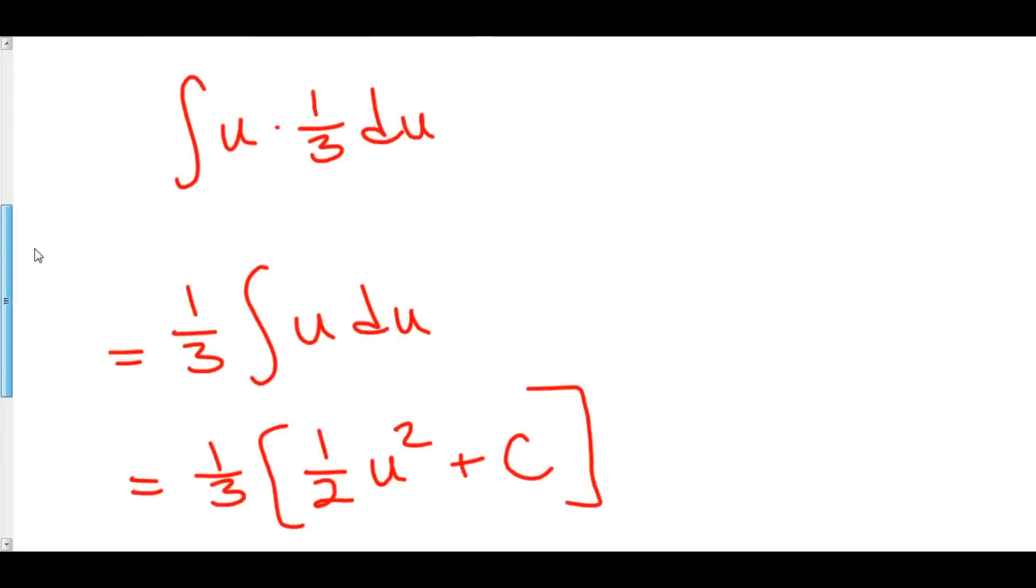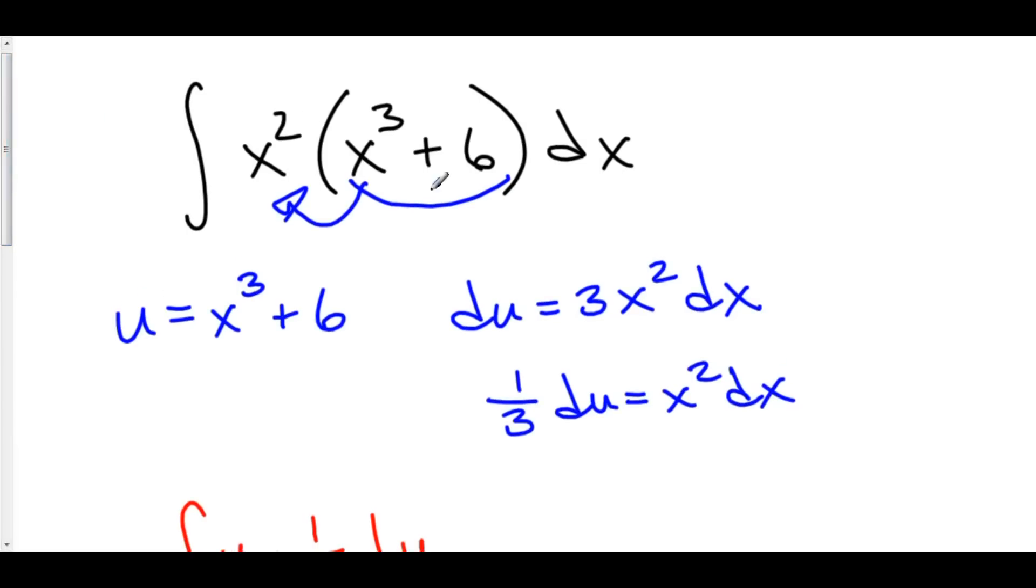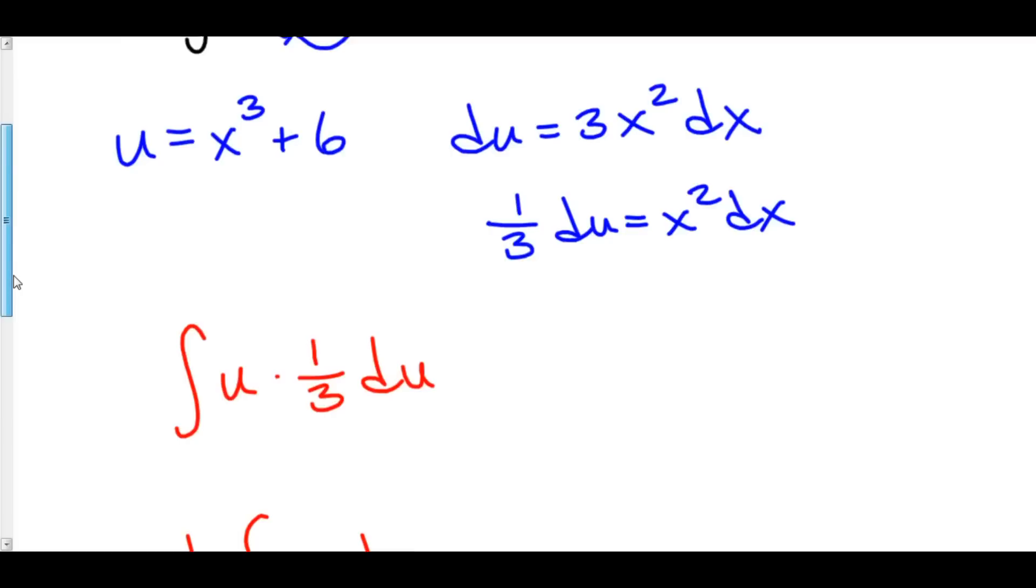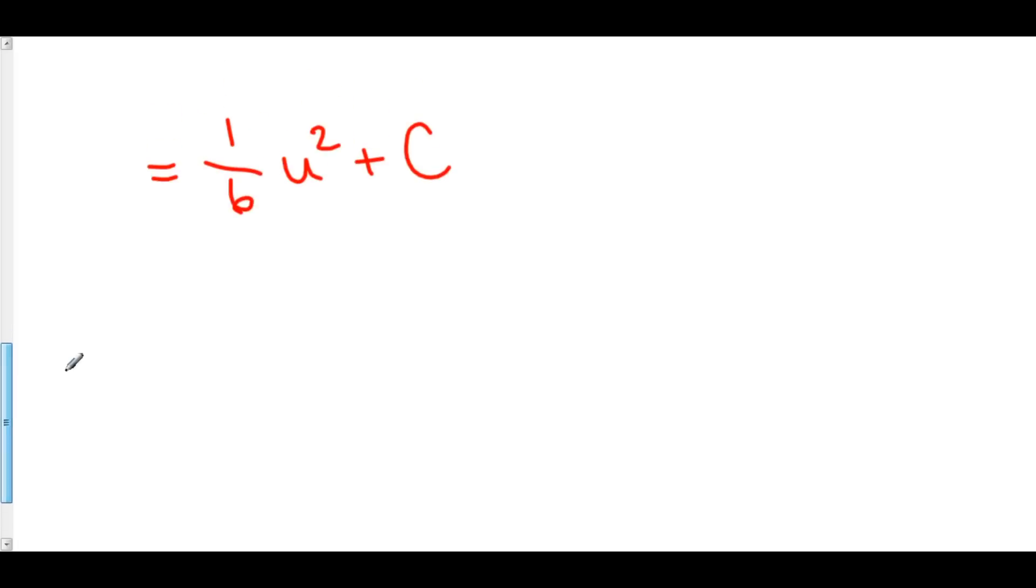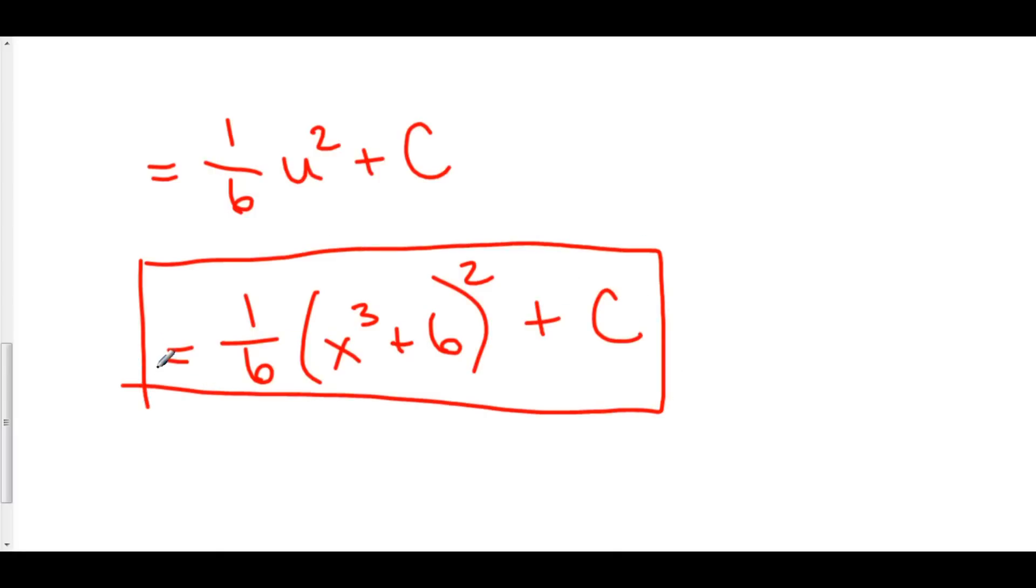But, of course, once again, my integral is in terms of x. So, I should probably rewrite my answer in terms of x. Well, u is equal to x cubed plus 6. So, rather than a u here, I'm going to rewrite this as 1 over 6 times x cubed plus 6 squared plus c. And, this right here is your anti-derivative.